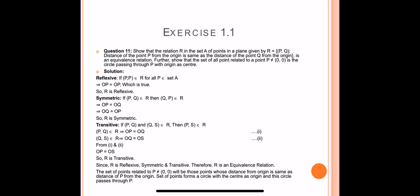Now the second part: the set of points related to P (where P is not equal to (0, 0)) will be those points whose distance from the origin is the same as the distance of P from the origin. The set of these points forms a circle with center at the origin, and this circle passes through the point P.